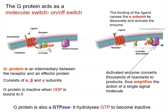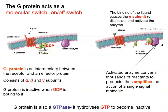To activate the G-protein, the ligand needs to bind to the extracellular domain of the receptor. The receptor undergoes a conformational change and activates the G-protein. As a result, the alpha subunit loses affinity for GDP and gains affinity for GTP — it replaces GDP with GTP. When that exchange happens, the alpha subunit dissociates from the other two subunits and activates an enzyme, protein, or channel that is downstream.